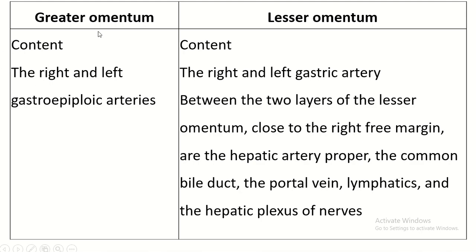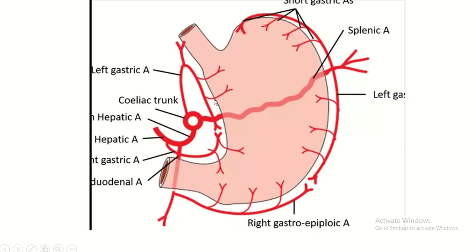The greater omentum contains the right and left gastroepiploic arteries, and the lesser omentum contains the right and left gastric arteries. This is the location of the lesser omentum — it contains the left gastric artery, which is a direct branch of the celiac trunk. The celiac trunk is the ventral branch of the abdominal aorta. This is the right gastric artery, which arises from the common hepatic artery of the celiac trunk.